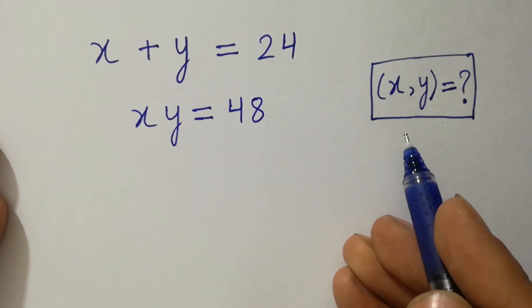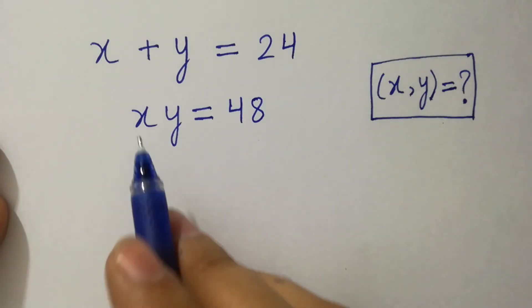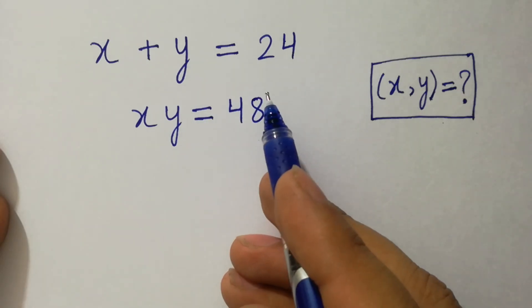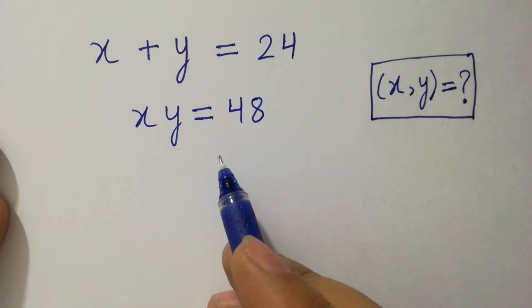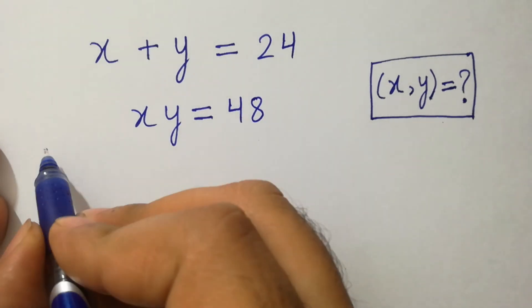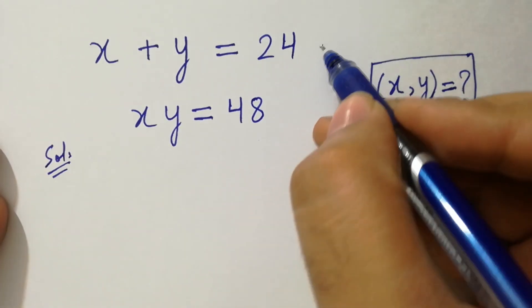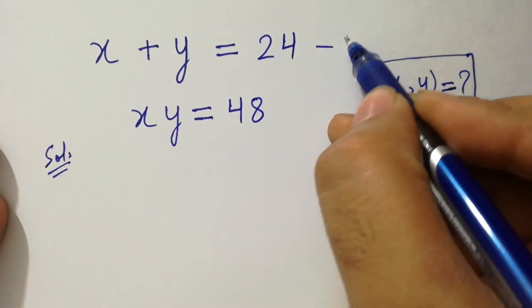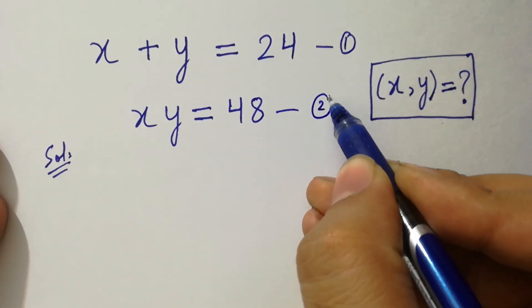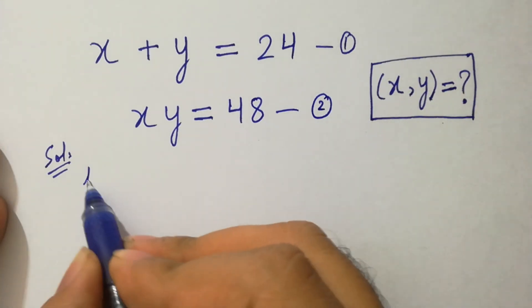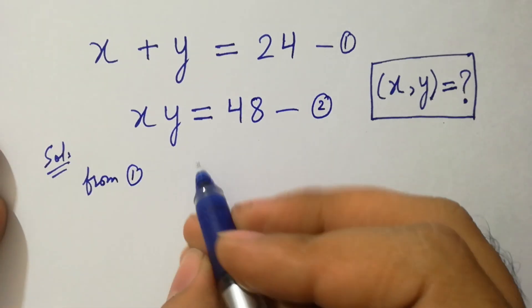Hello friends. Find the value of x and y if x plus y equals 24 and xy equals 48. Let's have a solution. Say this is the first equation and this is the second equation.